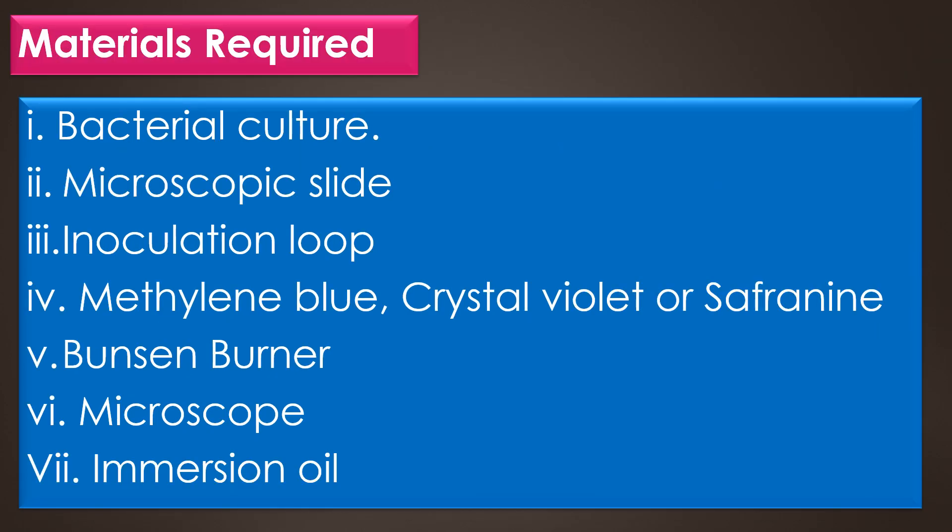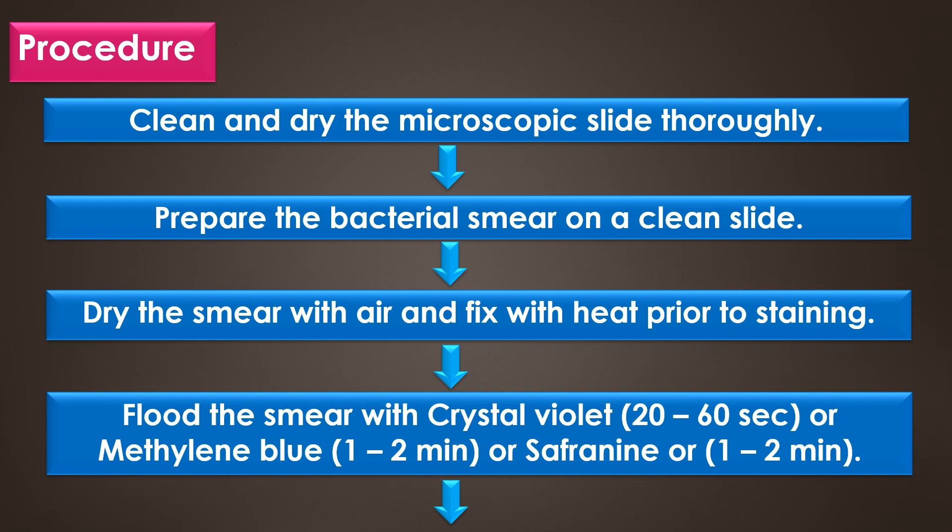The materials required for the simple staining technique are: bacterial culture, microscopic slide, inoculation loop, any one of the basic stains like methylene blue, crystal violet, or safranin, Bunsen burner, a microscope, and immersion oil. The procedure: first, clean and dry the microscopic slide thoroughly.